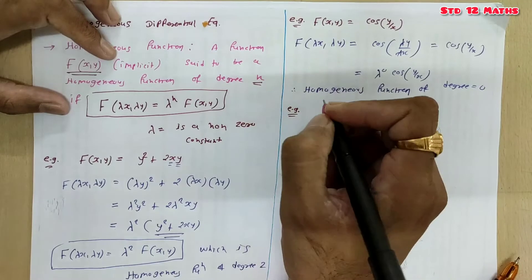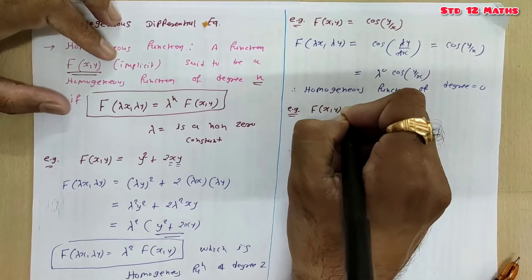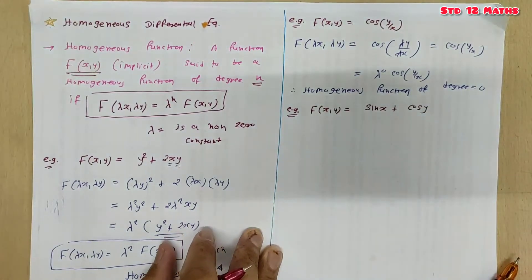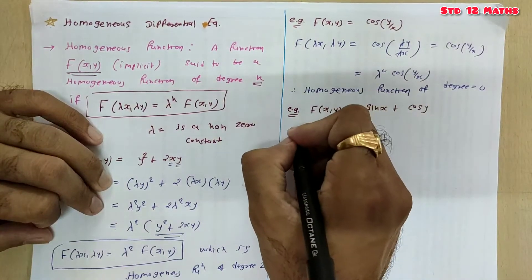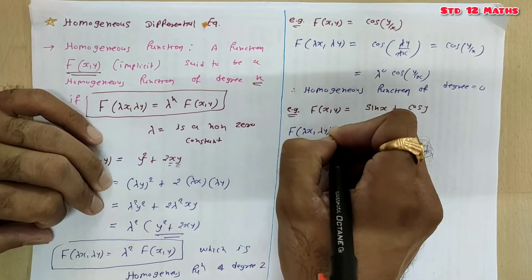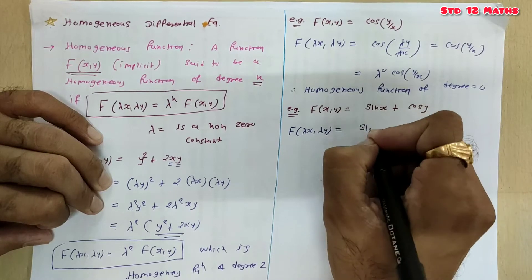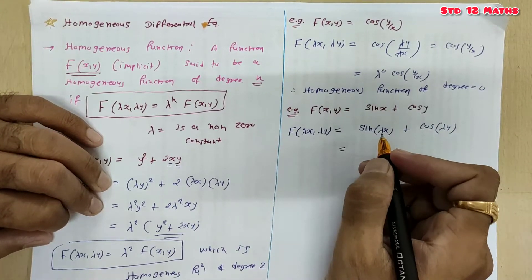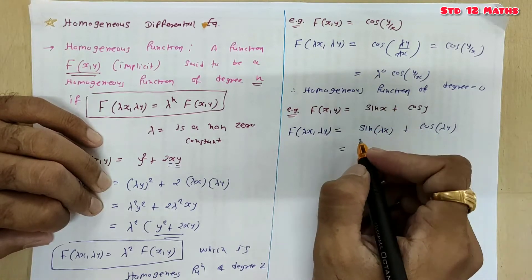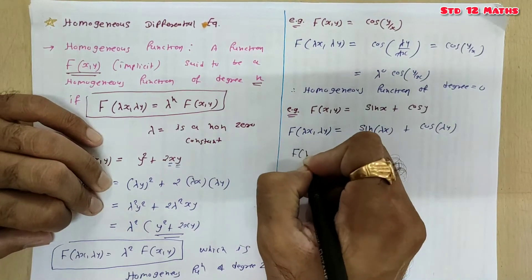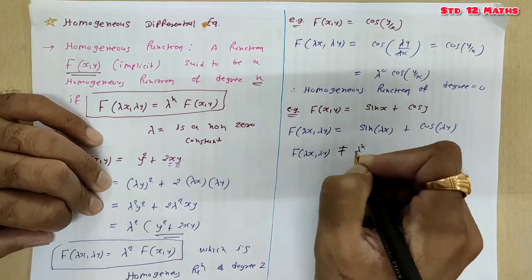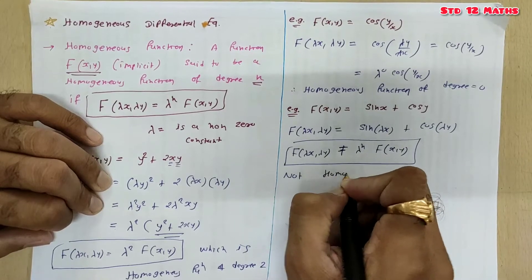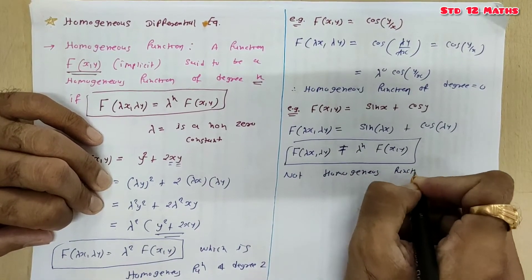Now, what if the function cannot be written in that form? For example, f(x, y) = sin(x) + cos(y). If we check: f(λx, λy) = sin(λx) + cos(λy). Can we take λ common from sin(λx)? No. So this is not in the form λⁿ · f(x, y), and hence this function is not a homogeneous function.